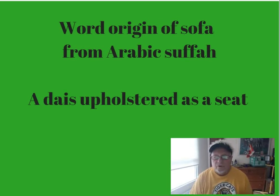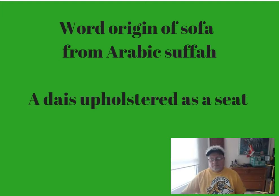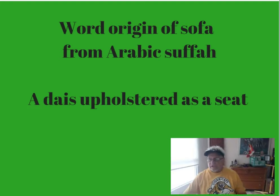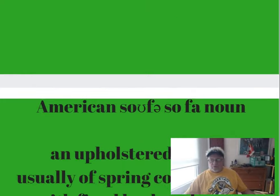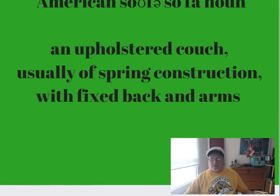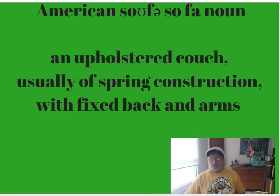The word origin of sofa comes from the Arabic, where they call it a dais upholstered as a seat. There are some words they throw in here, but the word upholstery is significant to me when we're talking about sofas. Here's the American definition: an upholstered couch, usually of spring construction.